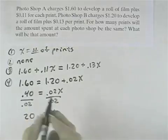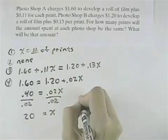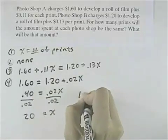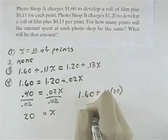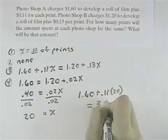So it will be after 20 prints, and if I substitute that back into either of the equations, I'll see $1.60 plus 11 cents times 20 should give me a total of $3.80.